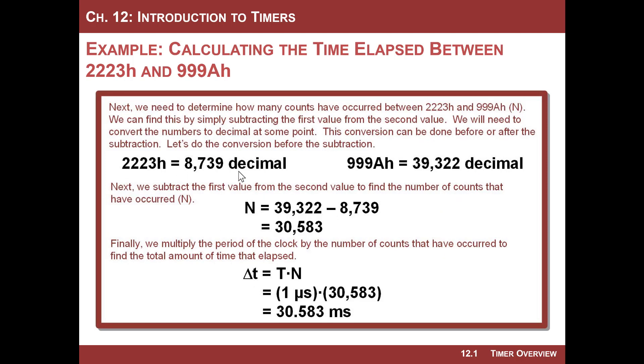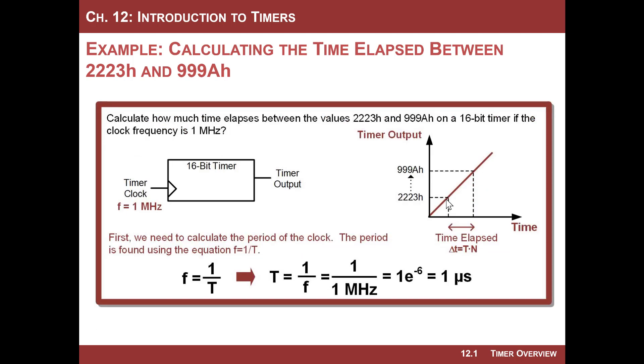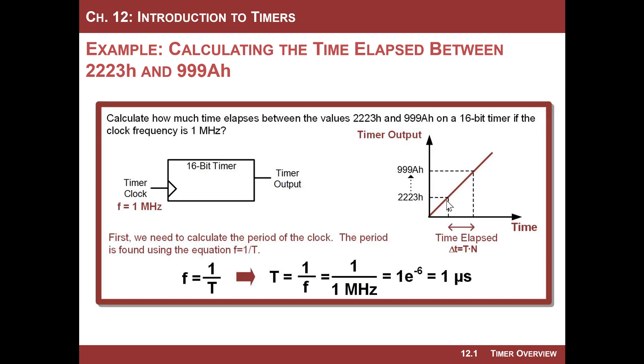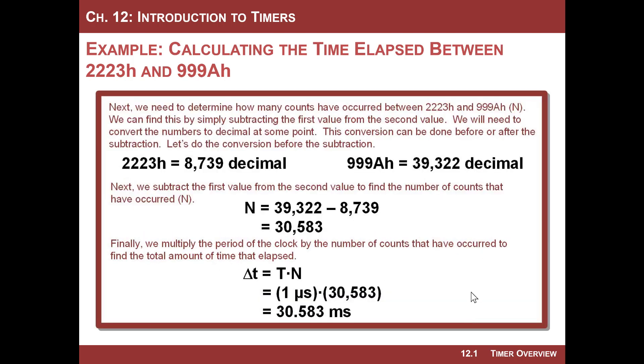Then all I simply do is subtract the two numbers. Let's flip them over to decimal to make it a little bit easier. So 2223h is 8,739 and 999Ah is 39,322. I simply subtract those two values. It gives me 30,583. That's how many count values have transpired between the starting value and the second value. Then I just take that 30,583, multiply it by one microsecond, which is the period of the clock. Boom, 30.583 milliseconds. That's how much time has passed between this value and that value. Very simple.